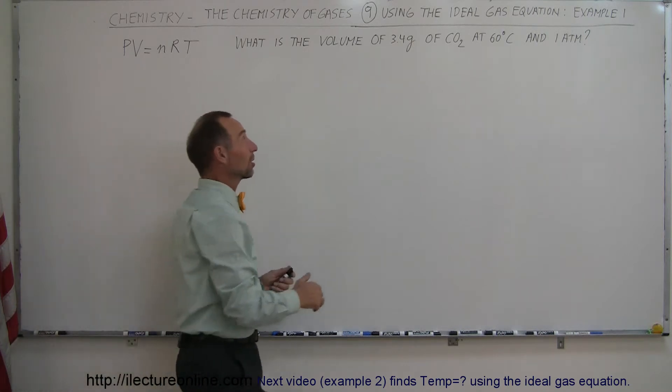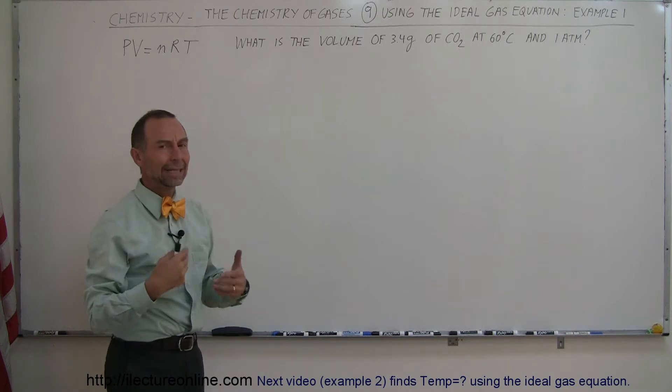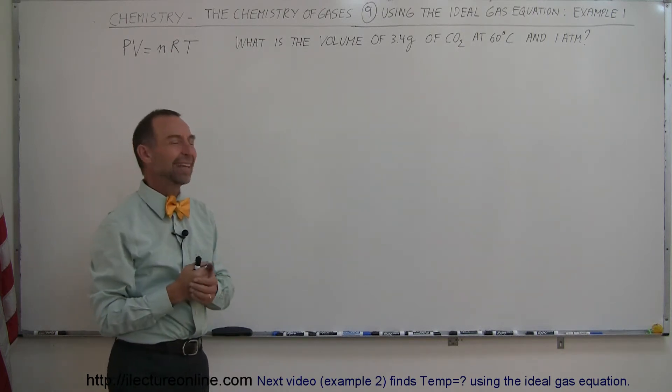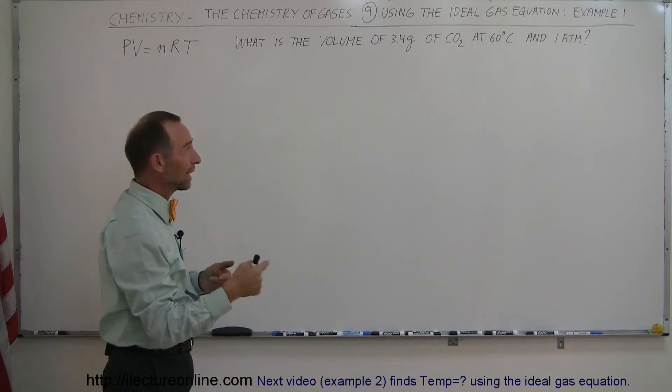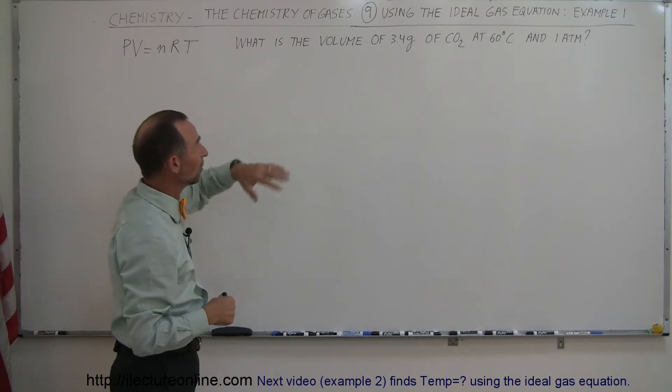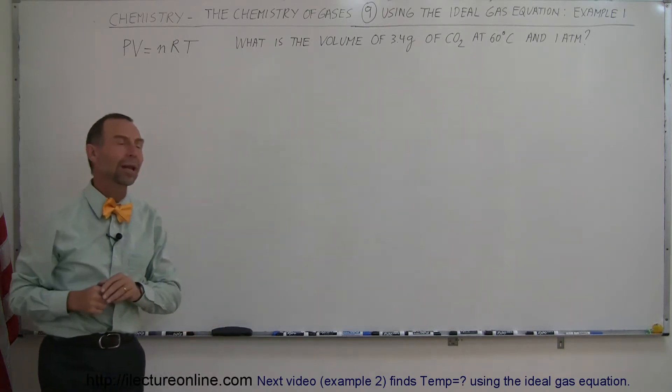If you want carbon dioxide to turn into a solid, because there's really no liquid phase of carbon dioxide in the typical 1 atmosphere condition, you have to be at about minus 80 degrees centigrade before gas carbon dioxide actually turns into a solid. So what is the volume of that much gas of carbon dioxide at 60 degrees centigrade and 1 atmosphere?